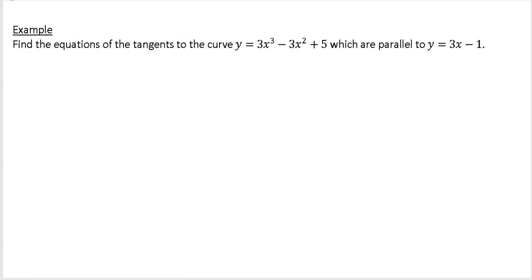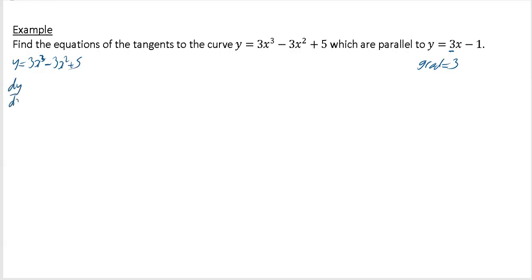It said find equations of the tangents of the curve y is equal to 3x cubed minus 3x squared plus 5, which are parallel to y equals 3x minus 1. This line has a gradient equal to 3, so that's really what we're doing. First of all, differentiate: that gives us 9x squared minus 6x. We want this to have a gradient of 3, so we're going to put 3 equal to 9x squared minus 6x.